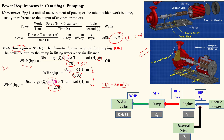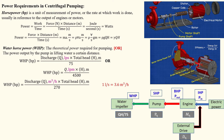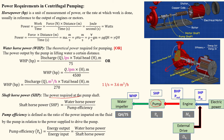Now consider the energy flow diagram. Electric energy comes into the motor, which rotates and is attached to a shaft. The shaft connects to the impeller. The total energy output available at the impeller is called water horsepower. The shaft horsepower is defined as the power required at the pump shaft. It is calculated as water horsepower divided by pump efficiency.